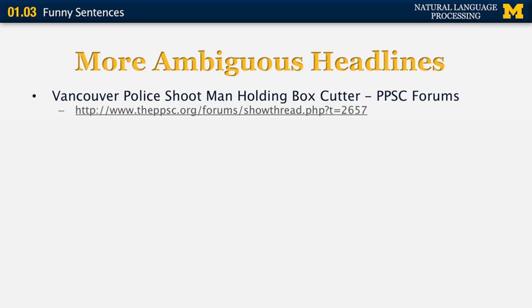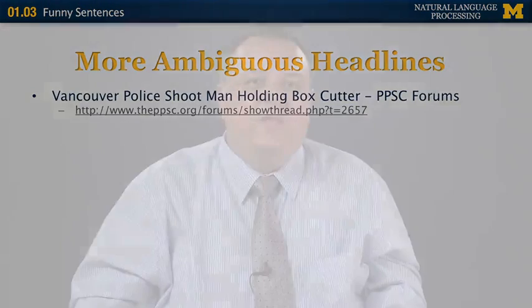The previous slide showed you some classic examples of ambiguous headlines. This slide is going to show you some examples that I actually collected on the internet recently. The first one is 'Vancouver police shoot man holding box cutter.' The two possible interpretations are: the man who was shot was holding the box cutter, which is probably what was intended, and the other interpretation is that the box cutter was used by the police to shoot the man.